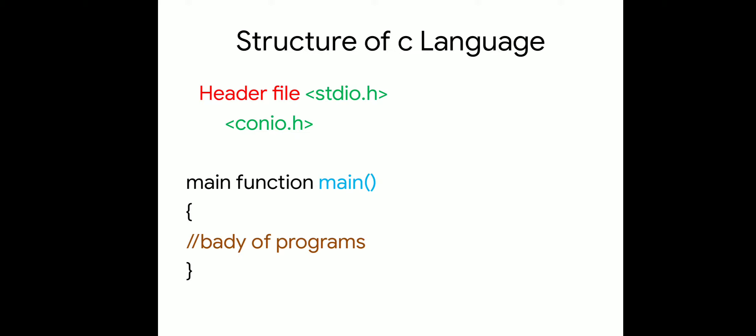conio.h stands for Console Input and Output. We use it when we need functions like clrscr and getch. Next, the main function is the entry point of a C program. Inside the opening and closing braces of main, the statements or instructions form the body of the program.